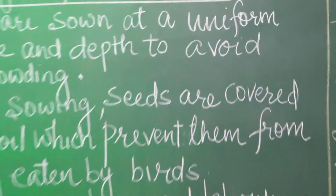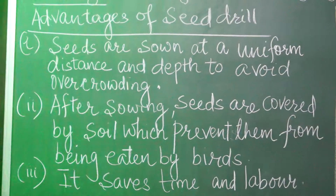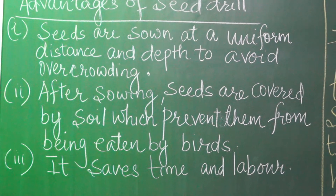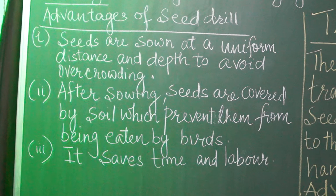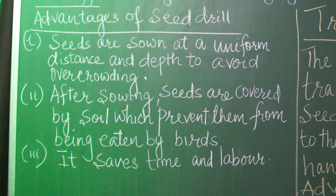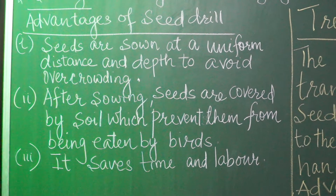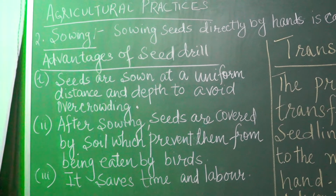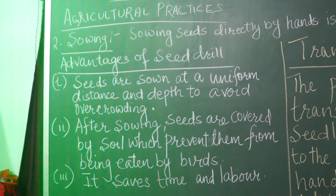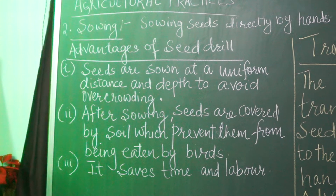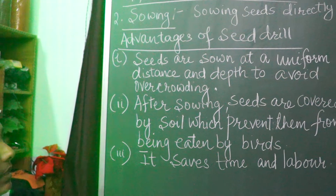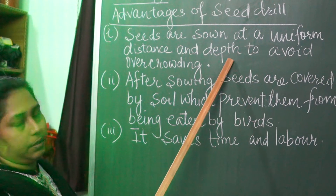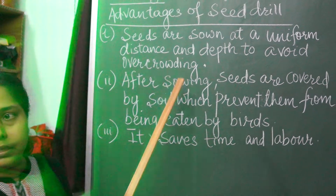Sowing with a seed drill is much better than sowing by hand, because the seeds should neither be placed too close nor too far apart. If the seeds are sown too close, they will not get enough sunlight, water, and nutrients. If the seeds are sown too far apart, it will be a wastage of field space. So, the seeds should be sown at a uniform distance and depth to avoid overcrowding.